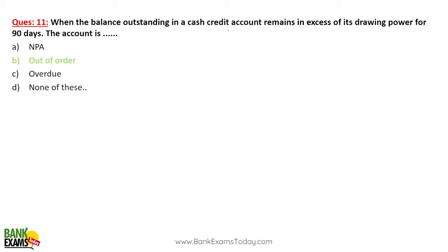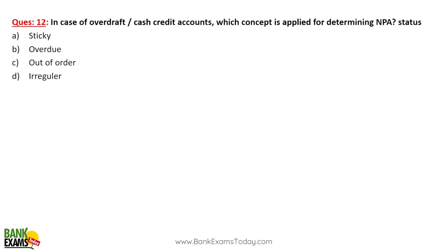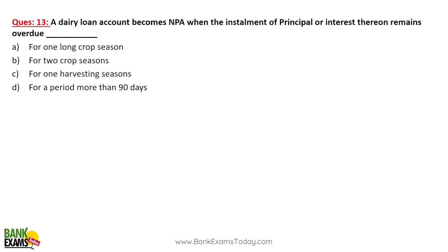In case of a cash credit account, if the balance outstanding remains in excess of the drawing power — for example, drawing power is 5 lakh but you withdrew 6 lakh and it remains 6 lakh for more than 90 days — then it is out of order. For overdraft and CC accounts, the out-of-order concept applies, not the standard NPA concept.